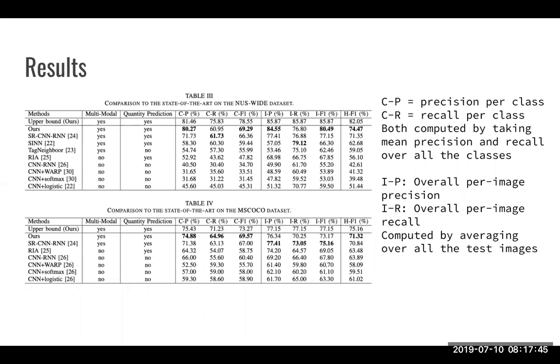This proposed model achieves a state-of-the-art for image annotation on a number of metrics. CP here is the precision per class and CR the recall per class. And both are computed by taking the mean precision and recall over all classes. And you can see that this model does pretty well on these kind of metrics. And the IP and IR, so here, are the overall per image precision and recall. So a little bit more detailed, just per image. And this is computed by averaging overall test images. So yeah, pretty good results.